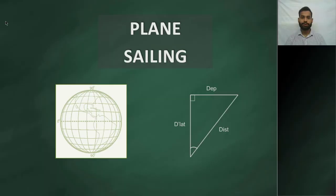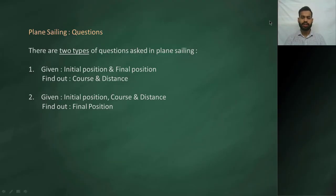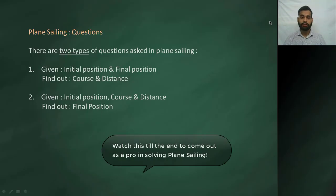Hello friends. In this video we are going to discuss the types of questions which are asked under plain sailing and also the correct way to approach them. There are basically two types of questions. The first is when the initial position and the final position are given and you need to find the course and the distance between them. The second type is when the initial position, the course, and the distance are provided and you need to find out the latitude and longitude of the final position.